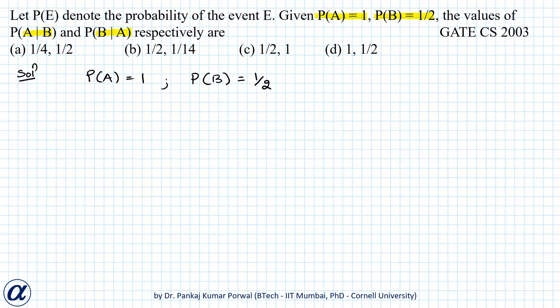Because P(A) is 1, if we take the intersection of A with any other event, that will be equal to the other event, because A equals the sample space since P(A) equals 1.